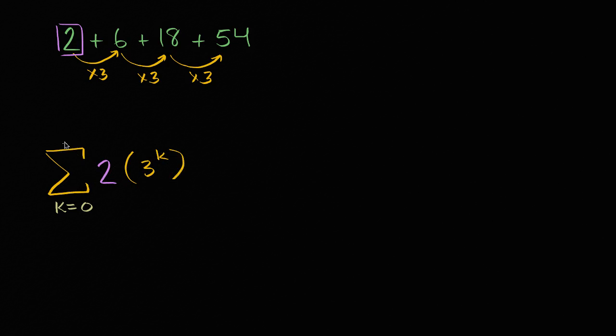So before I even write how many terms we have here, or how high we go with our k, let's see if this makes sense. When k equals zero, it's two times three to the zeroth power. So that's two times one, which is this first term right there. When k equals one, it'll be two times three to the first power. Well, that's going to be six.